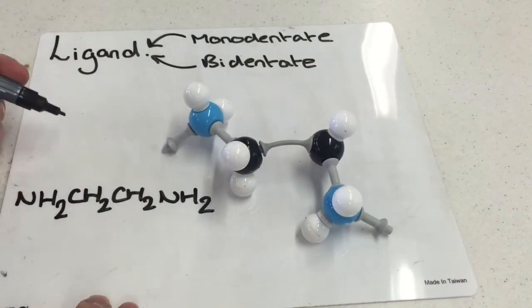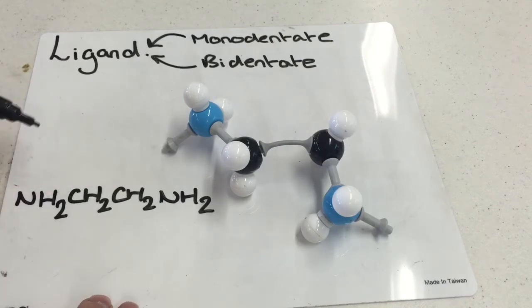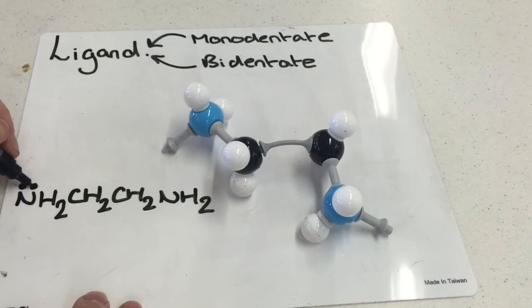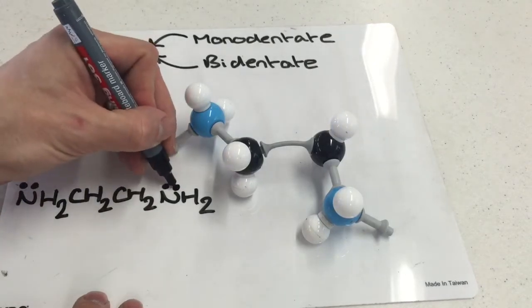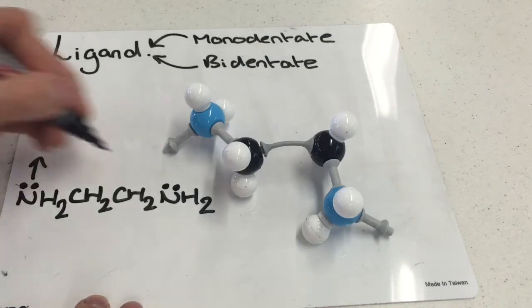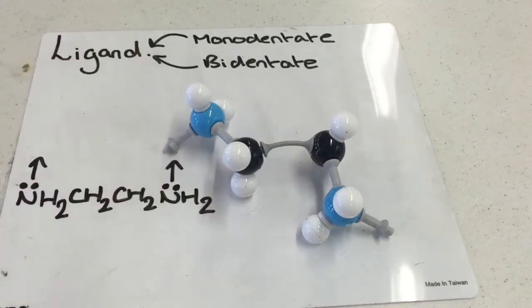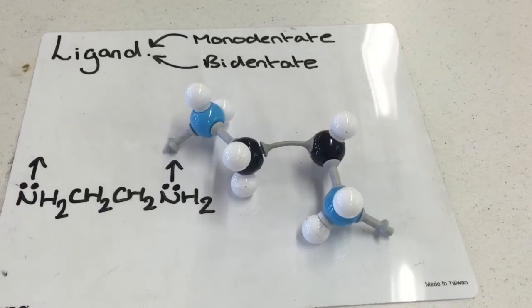Now this is often referred to as ethyldiamine or we can call it 1,2-diaminoethane. What we've got here is, at either end of the molecule, a nitrogen with a lone pair of electrons, and this is going to form two separate coordinate bonds.